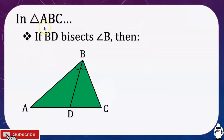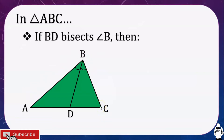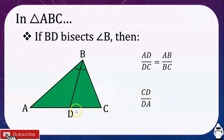Let's have this illustration to better understand. In triangle ABC, if BD bisects angle B — meaning we have an angle bisector that divides angle B into two congruent parts — then it divides AC into two segments: AD and DC. These segments are proportional to the other two sides of the triangle, AB and BC. So AD over DC is equal to AB over BC. Or alternatively, CD over DA is equal to CB over BA.